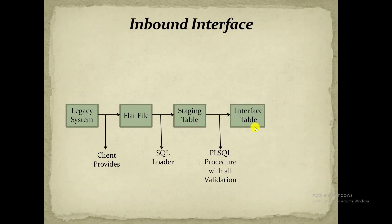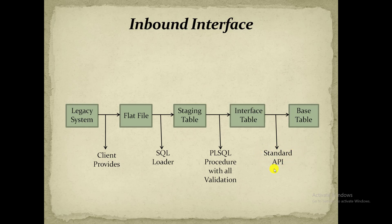Suppose the data is inserted from the staging table to the interface table. The next and last step is to insert that data from the interface table to the base table, and that is done using a standard API. Oracle has already built standard APIs to insert the data from the interface table to the base table. These interface tables and base tables are already created by Oracle. You just have to create the staging table and by calling the API you can transfer the data from the interface table to the base table.